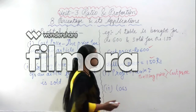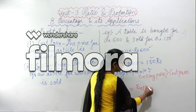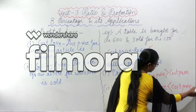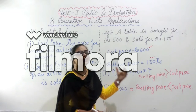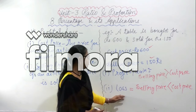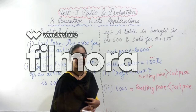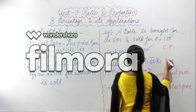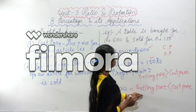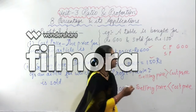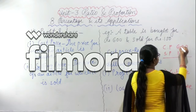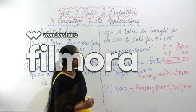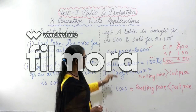So this is the condition of loss. For loss, cost price will be greater than the selling price. Here the cost price is Rs. 600 and the selling price is Rs. 150, so you are getting a loss of Rs. 450 because cost price is greater than selling price.